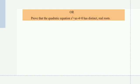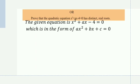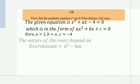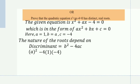The next question asks us to prove that the equation has distinct real roots. The given equation is x² + ax − 4 = 0, which is in the form ax² + bx + c = 0. Here a = 1, b = a, c = −4. The nature of the roots depends upon the discriminant b²−4ac. Substituting the values: a²−4×1×(−4) = a²+16.